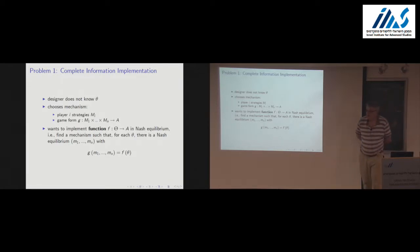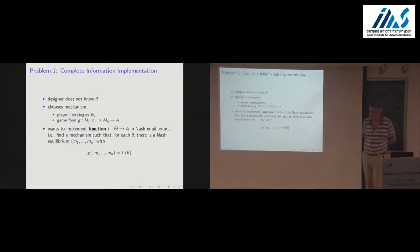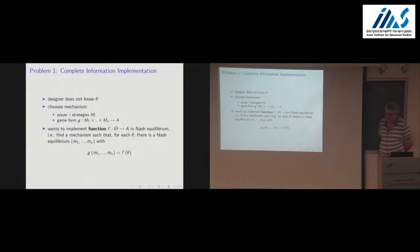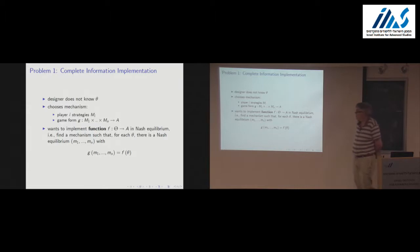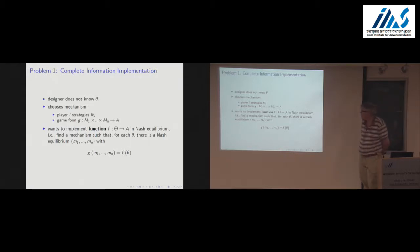Eric talked about social choice correspondences; I'm going to talk about social choice functions, presenting everything for the case of functions. We saw in the first lecture that it would be nice to implement in dominant strategies, but the bad news is that you can't under a full domain assumption. So we're going to look at Nash equilibrium. We say we're implementing the social choice function F if, in any Nash equilibrium of the mechanism — the game generated by the mechanism and agents' preferences — we get the outcome we desire.